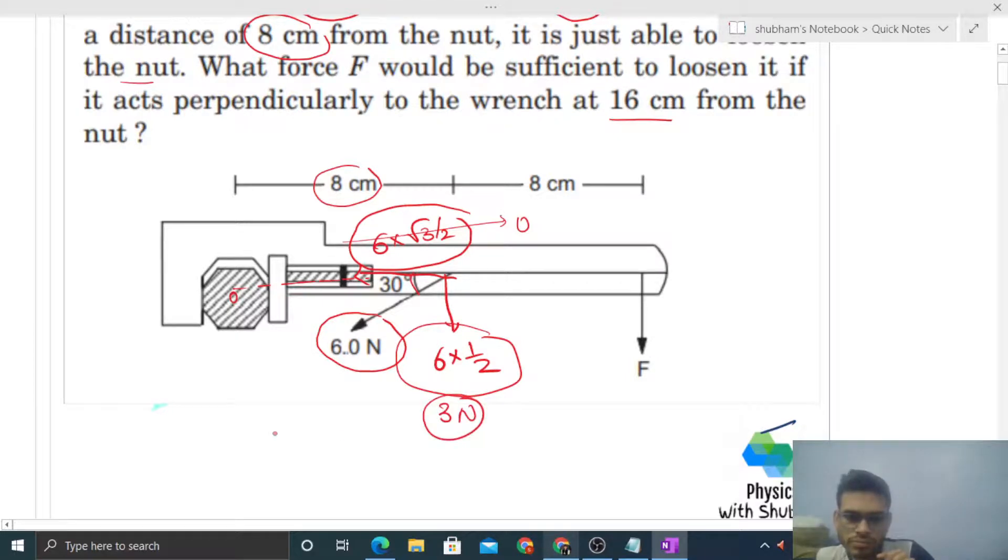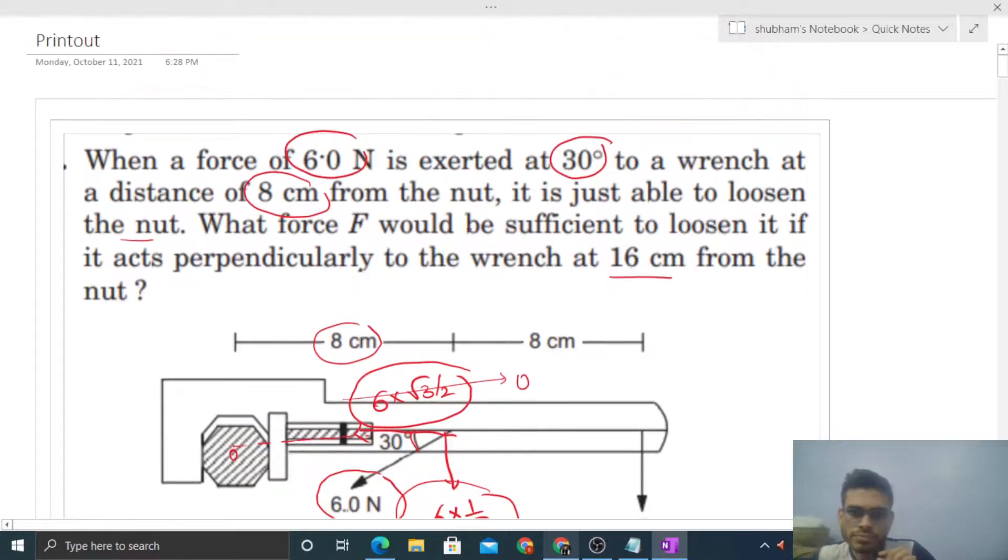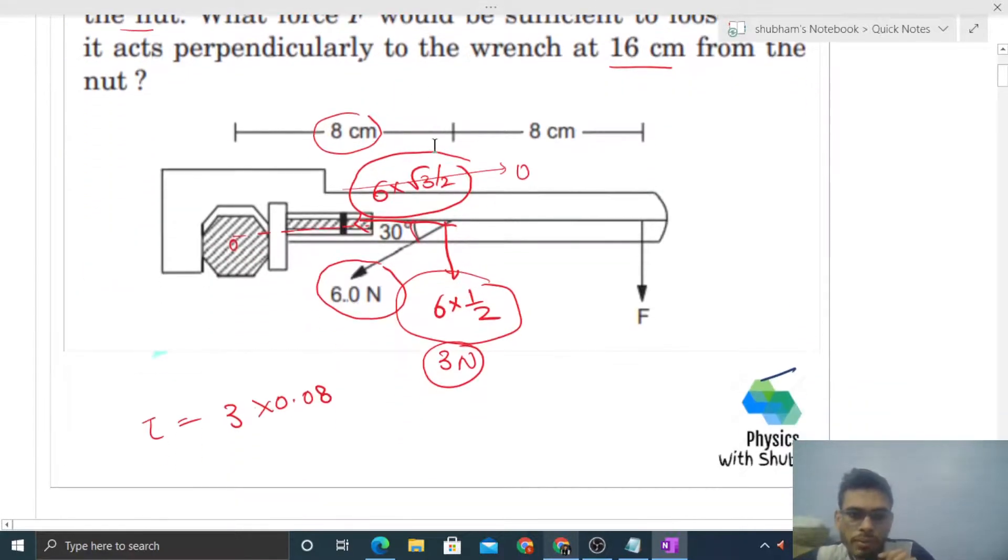That's 3 N times its perpendicular distance, which is 8 cm or 0.08 m. This is the torque. This is the minimum torque—it is given that it's just able to loosen the nut, so this is the minimum torque with which you can rotate or loosen this nut.